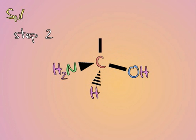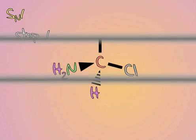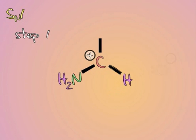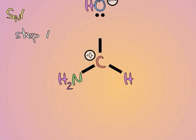So SN1 reactions occur in two discrete steps. The first step, the departure of the leaving group, is the slow step. And as we may recall from general chemistry, that makes it the rate-limiting step. The rate of the overall reaction will be completely independent of the second step, in which the nucleophile comes in.